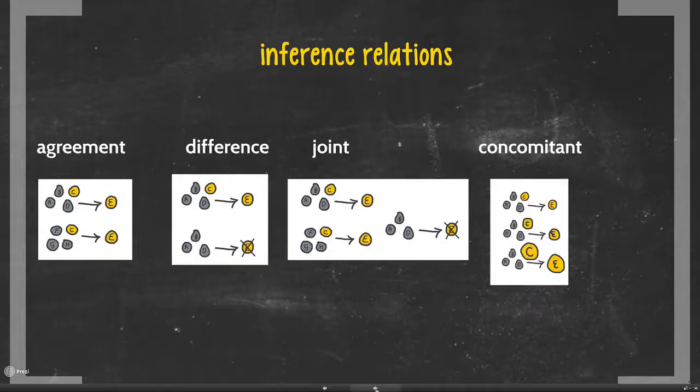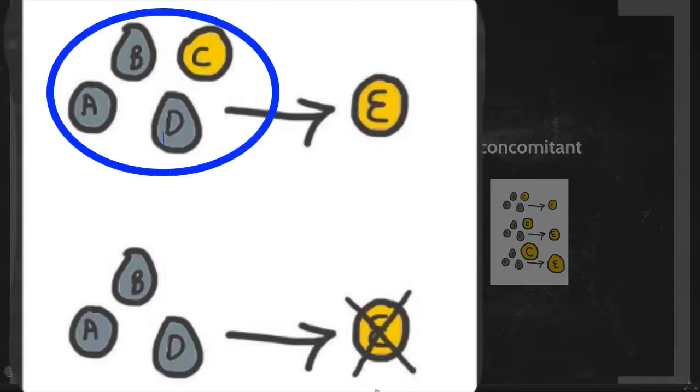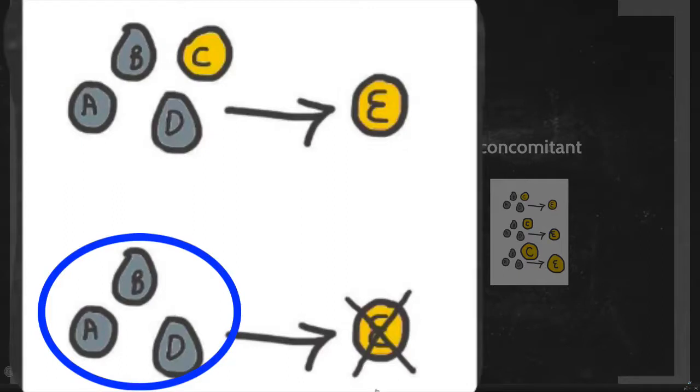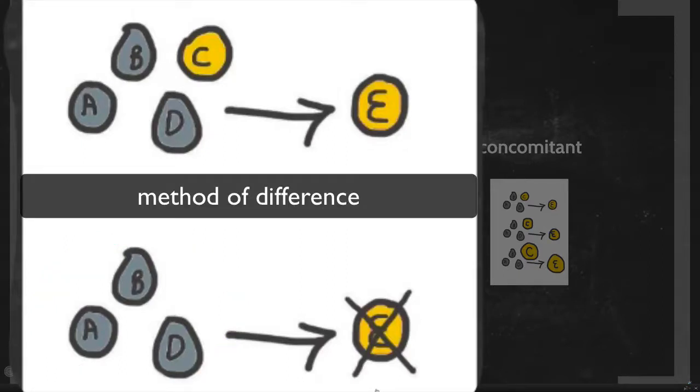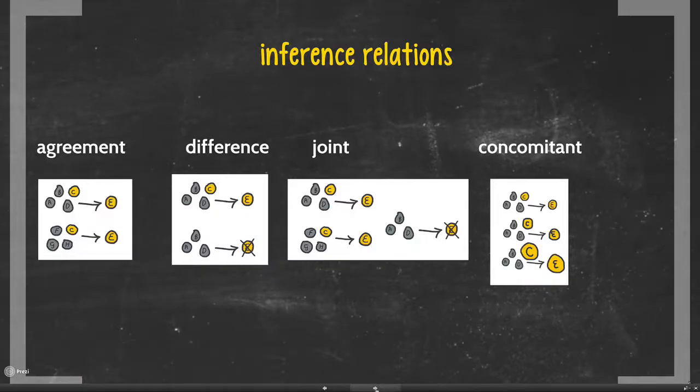With difference, you have a situation where in the first instance, A, B, C, D, A, B, C, D, you have E happening. And then in the second instance, when something happens, you only have A, B, and D. You don't have C. And you know what happens? No E happens. And you can assume that you have no E because you didn't have C. And apologies to drug dealers on this point.